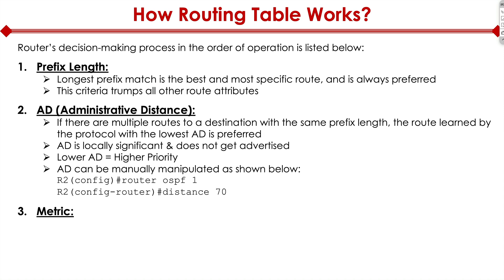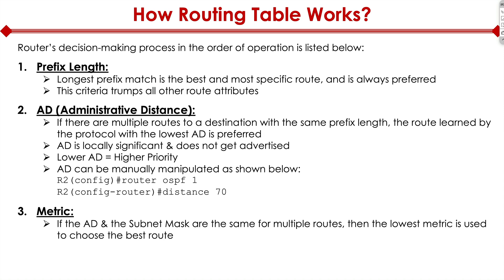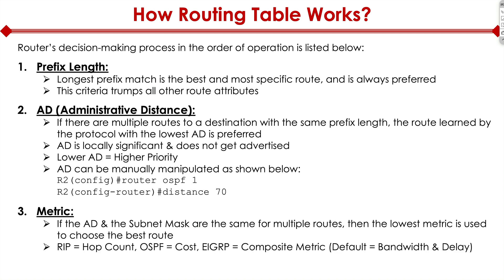The final criteria is metric. If the administrative distance, subnet mask, and prefix length are all the same for multiple routes, then the lowest metric is used to choose the best route. RIP uses the metric of hop count, OSPF uses the metric of cost, and EIGRP uses what's called a composite metric or K values, with the default being bandwidth and delay.